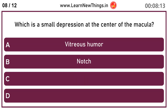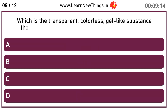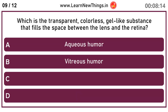Fovea, which is a small depression at the center of the macula. Vitreous humor, which is the transparent colorless gel-like substance that fills the space between the lens and the retina.